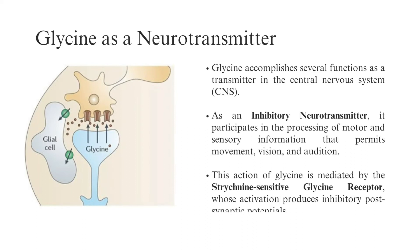Glycine as a Neurotransmitter: Glycine accomplishes several functions as a transmitter in the central nervous system. As an inhibitory neurotransmitter, it participates in the processing of motor and sensory information that permits movement, vision, and audition. This action of glycine is mediated by the strychnine-sensitive glycine receptor, whose activation produces inhibitory postsynaptic potentials.